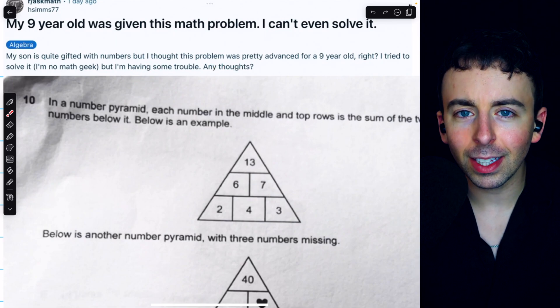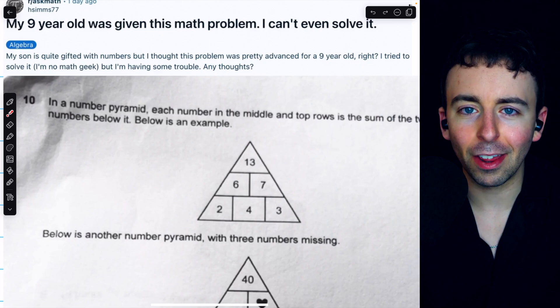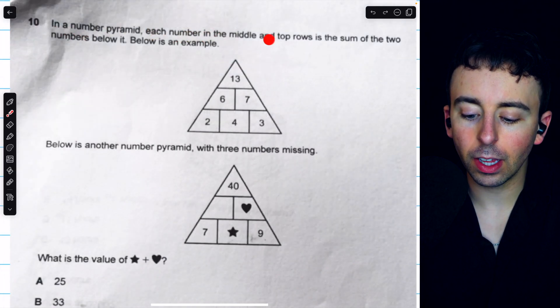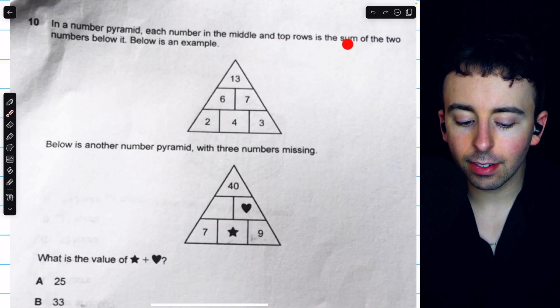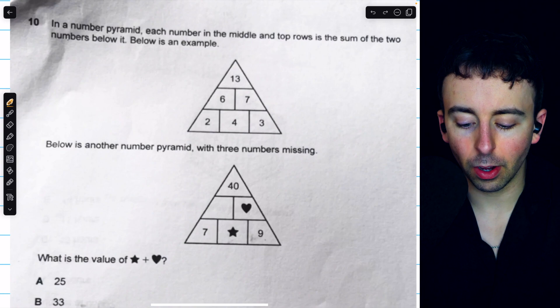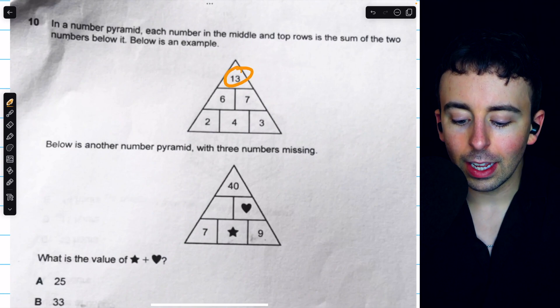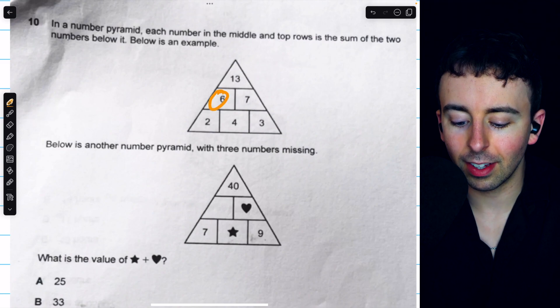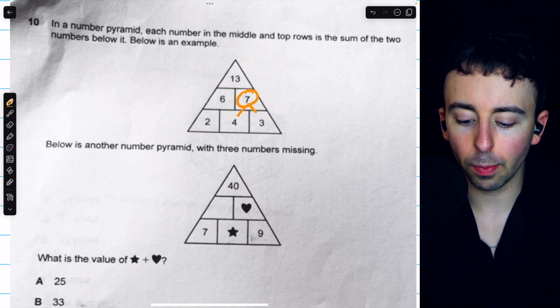I'm no math geek either, but let's take a look at this worksheet math problem. In a number pyramid, each number in the middle and top rows is the sum of the two numbers below it. Below is an example, so we could see that 13 is equal to 6 plus 7. On the other hand, 6 is equal to 2 plus 4, and 7 is equal to 4 plus 3.